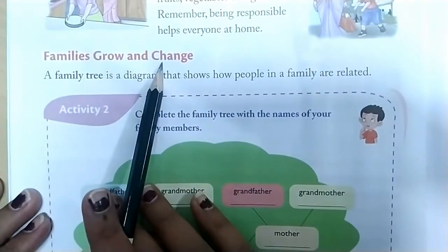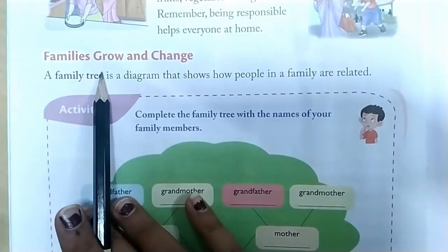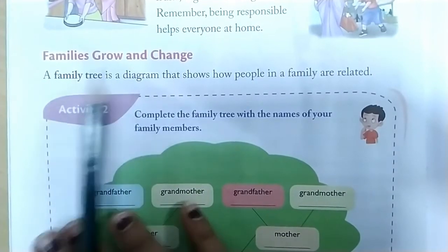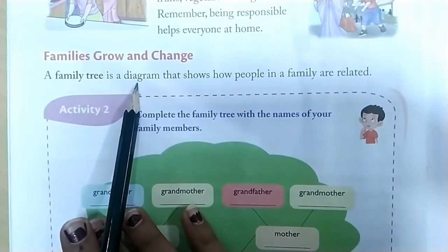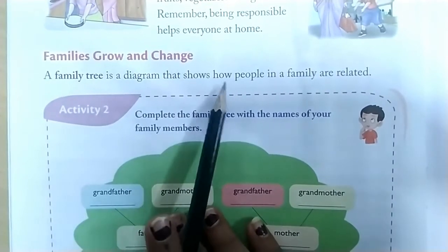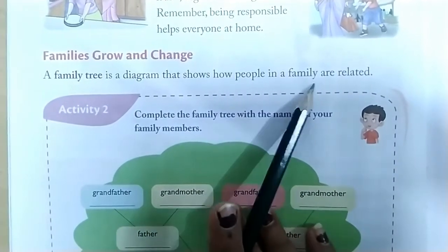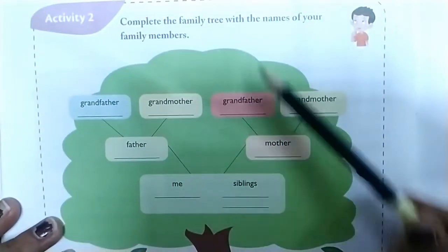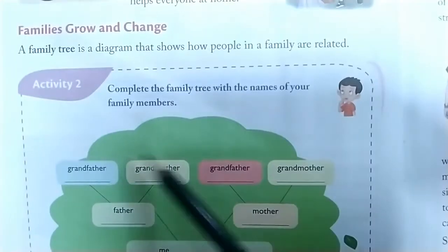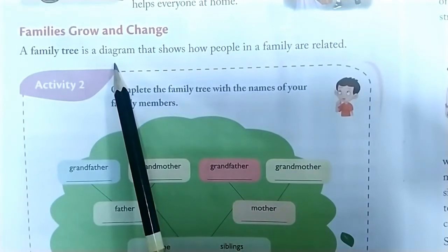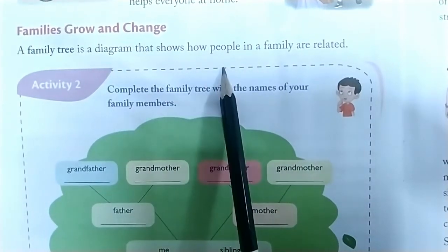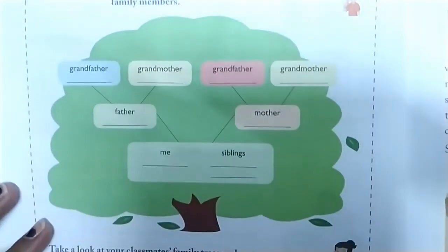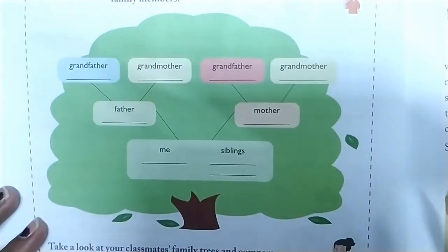Families grow and change. A family tree is a diagram that shows how people in a family are related. Here a family tree is given. This diagram shows how people in the family are related to each other — how they are connected to one another.